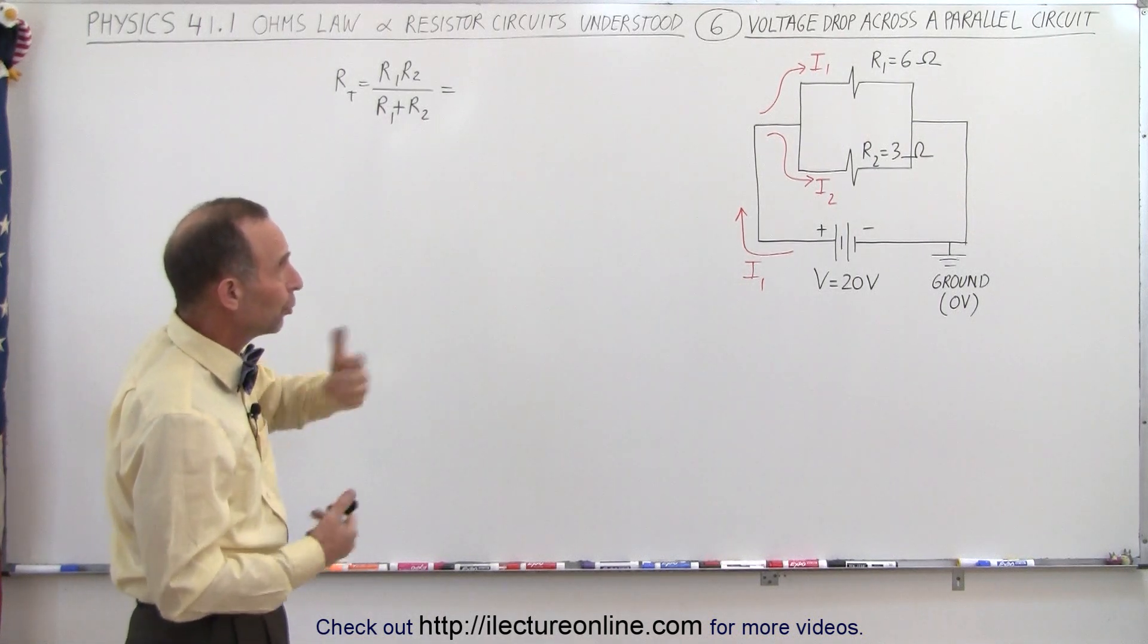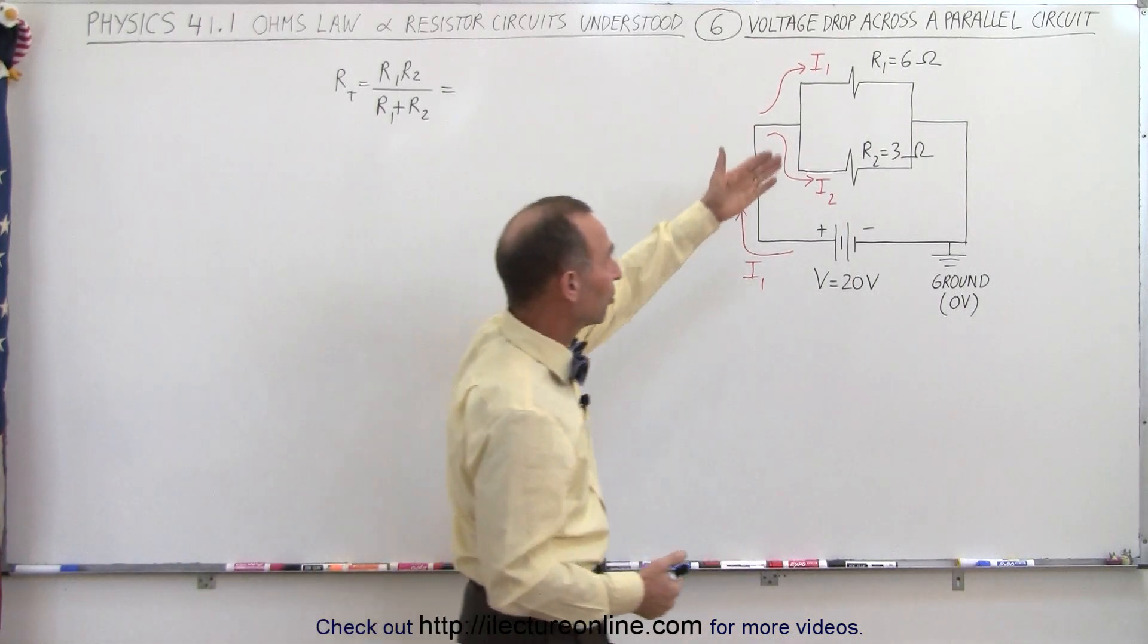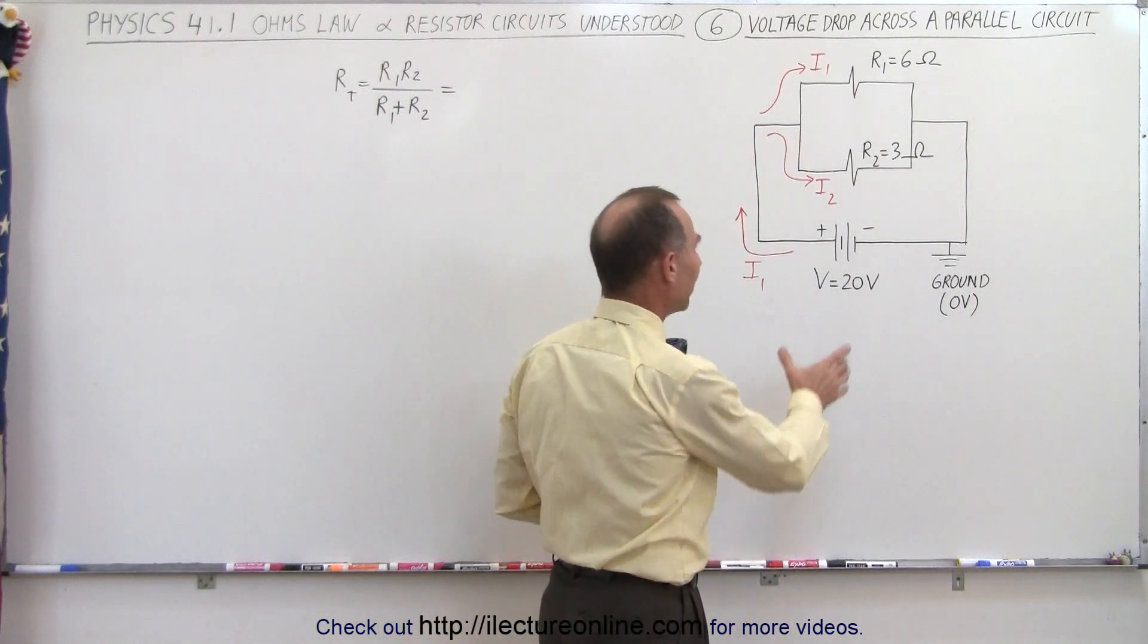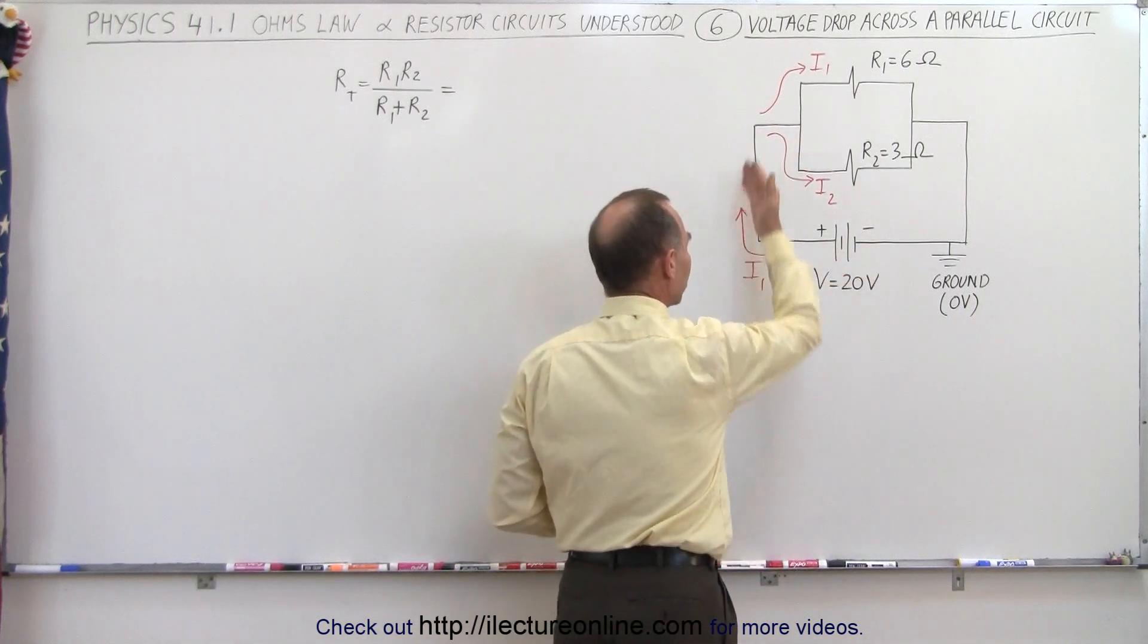So here we have an example, two resistors in parallel, one that is six ohms, one that is three ohms, and there's a 24-volt battery pushing current through the circuit.